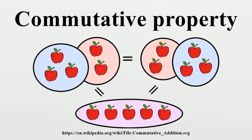Symmetry: Some forms of symmetry can be directly linked to commutativity. When a commutative operator is written as a binary function, the resulting function is symmetric across the line y equals x. As an example, if we let a function f represent addition so that f equals x plus y, then f is a symmetric function. For relations, a symmetric relation is analogous to a commutative operation — if a relation R is symmetric, it shares this analogous property.